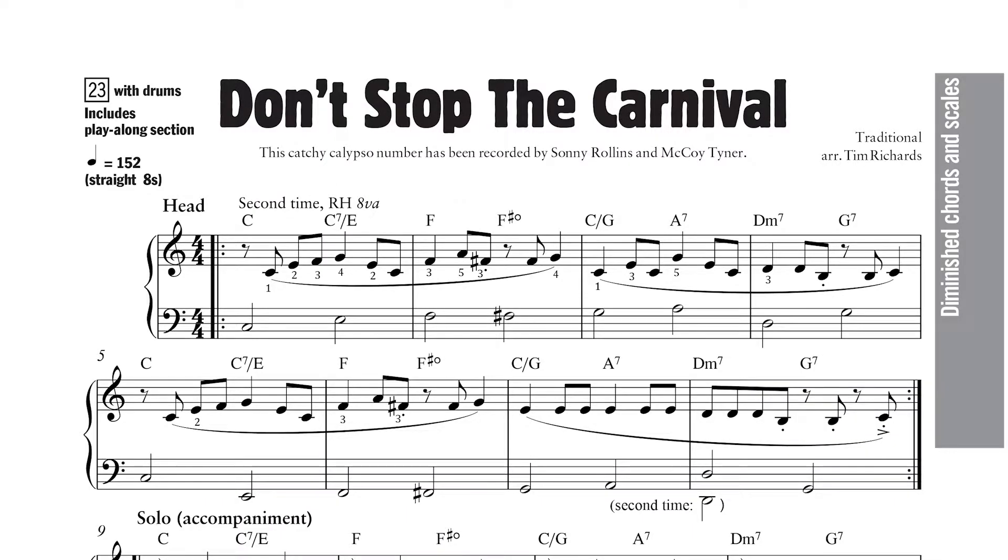Diminished chords are often used as passing chords. A good example is the tune you heard at the front of this clip, Don't Stop the Carnival, a traditional calypso number consisting of eight chords spread over a four bar repeating sequence.